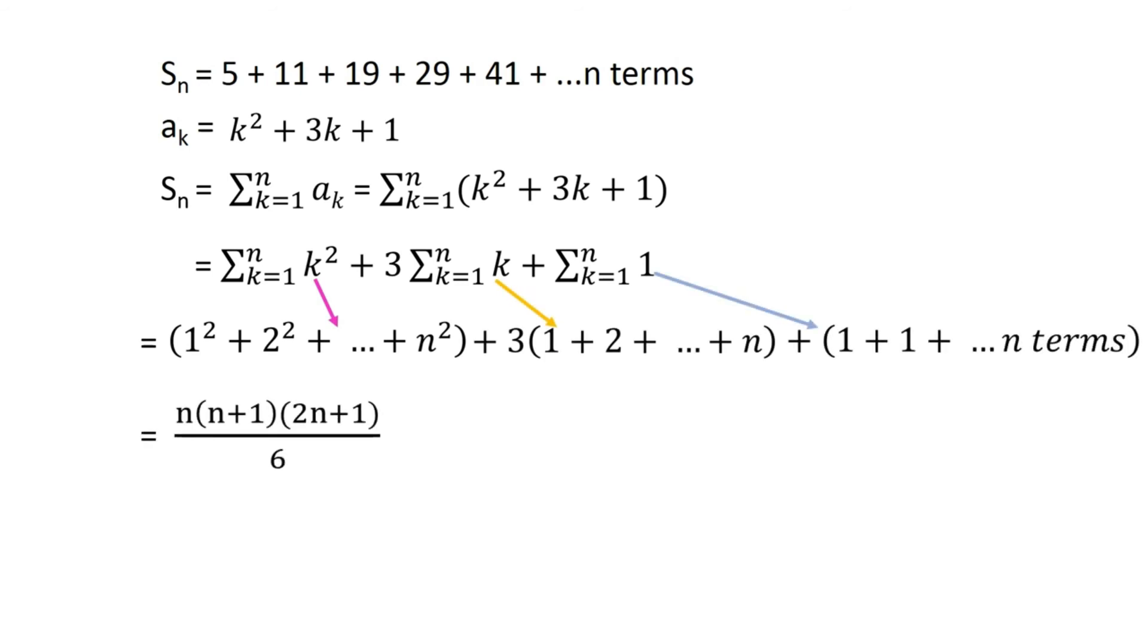1 square plus 2 square and so on up to n square equals n times (n+1) times (2n+1) divided by 6.